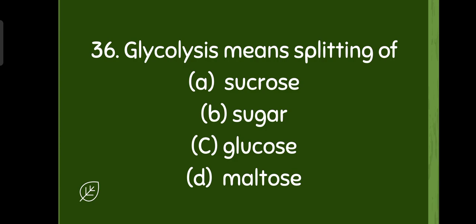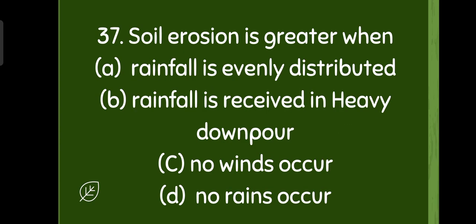Glycolysis means splitting of glucose. Glyco means glucose, lysis means breakdown. Soil erosion is greater when rainfall is evenly distributed or rainfall is received in heavy downpour, no wind occurs, or no rain occurs. Option B is the correct one.